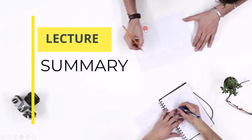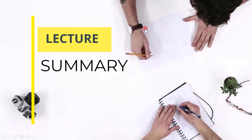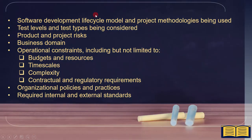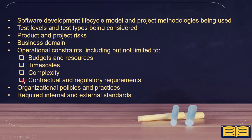Let's quickly summarize all the points mentioned with respect to context. Contextual factors that influence the test process for an organization include: software development lifecycle model and project methodologies being used, test levels and test types being considered, product and project risks, business domain, operational constraints — including but not limited to budgets and resources, timescales, complexity, and contractual and regulatory requirements — organizational policies and practices, and required internal and external standards.